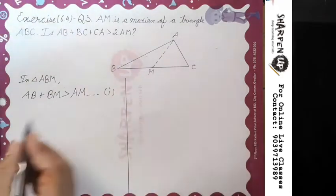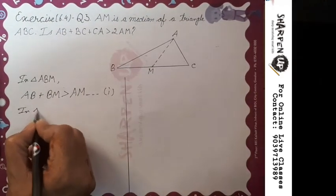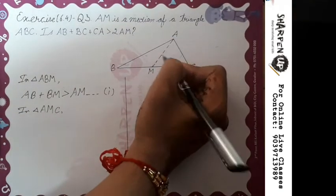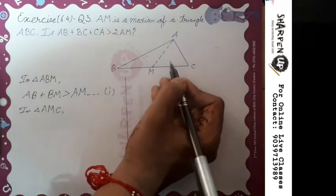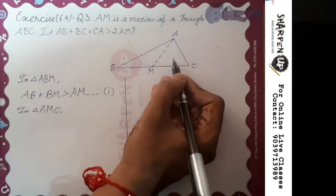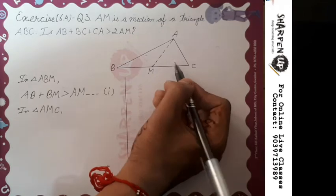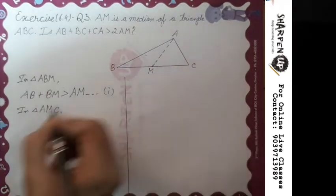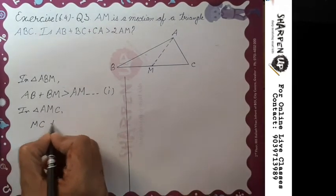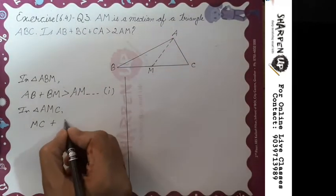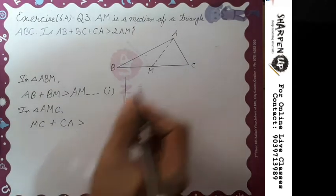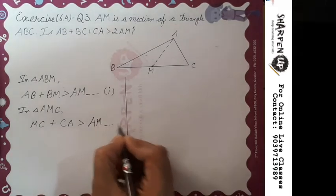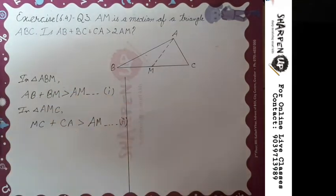Now take our second triangle, AMC. In triangle AMC, we again apply the triangle inequality property: the sum of two sides is always greater than the third side. So MC plus CA is greater than AM. Let's consider this our second expression.